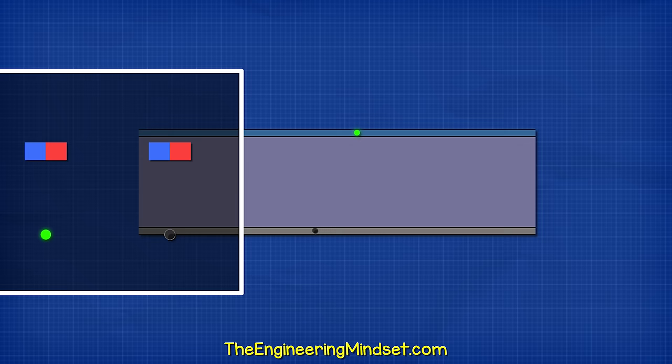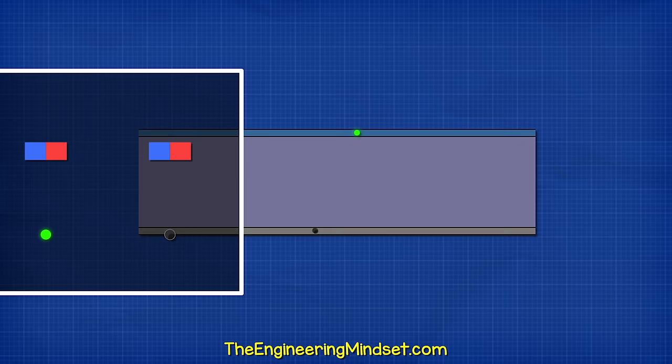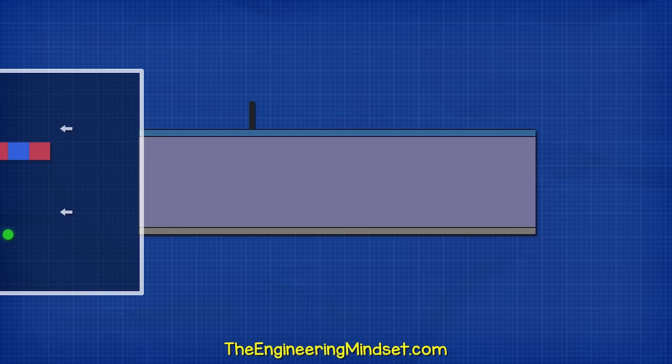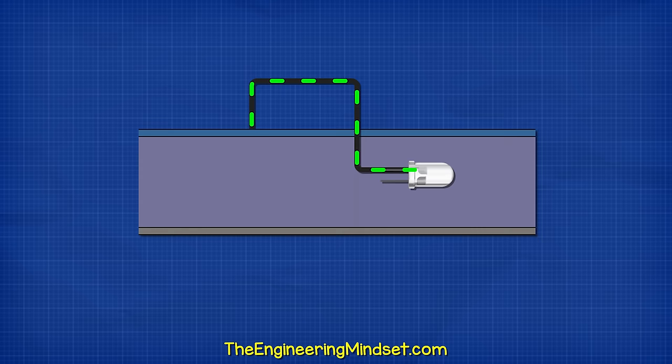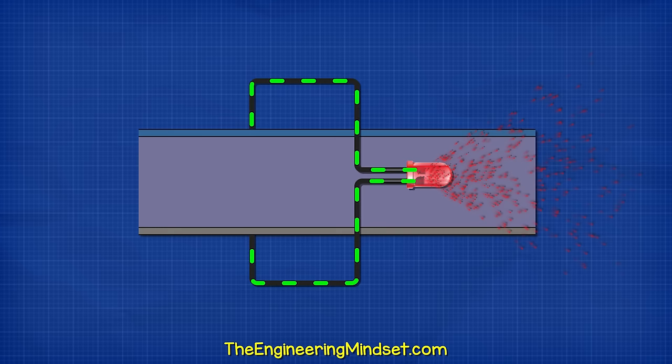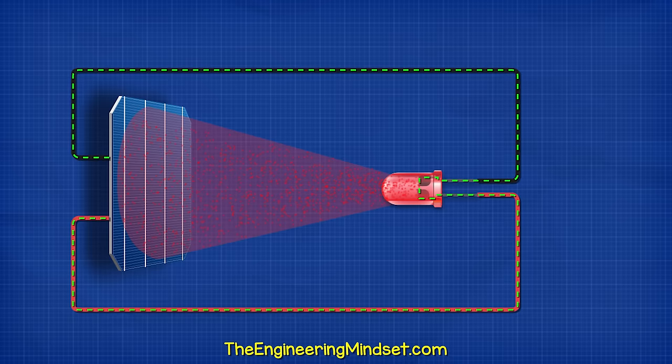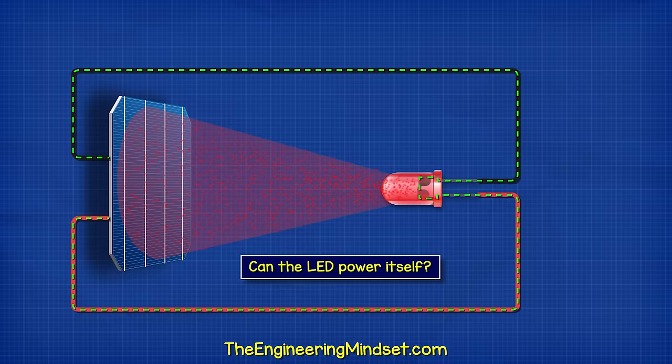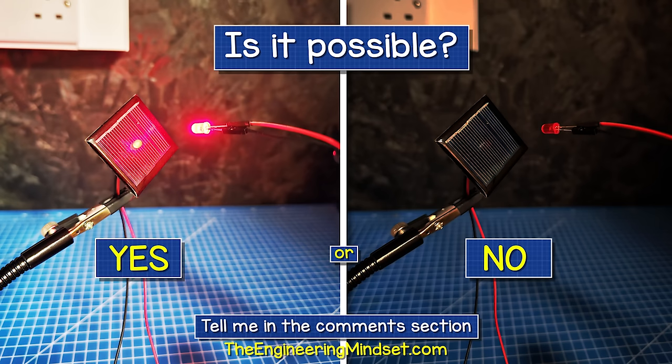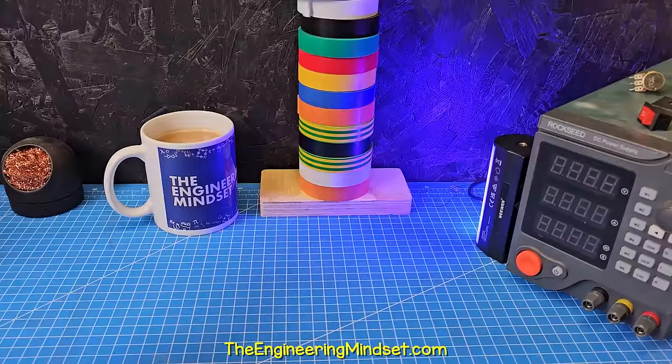I'll explain in detail how it works later in the video. But the hole drifts down to the bottom and the electron is pulled into the top layer. The electron is attracted to the hole, similar to how opposite ends of a magnet attract. If we provide a path using a wire, the electron will flow through this to get back to the hole. We place things such as LEDs in the path and that way the electron has to flow through them, causing it to emit light, which means it emits photons. So if the LED emits photons and the solar cell absorbs photons, then can the LED power itself? Tell me your answers in the comments section and I'll tell you the answer later in the video.